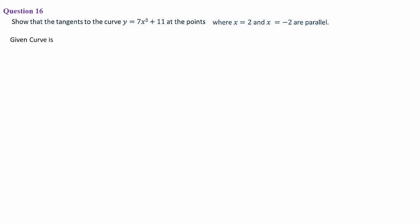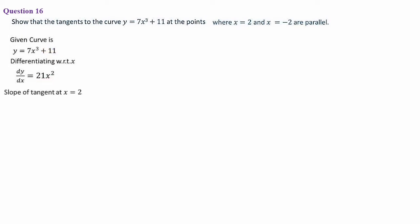The curve is y = 7x³ + 11. Differentiating: dy/dx = 7 × 3x² = 21x². Slope of the tangent at x = 2: dy/dx at x = 2 = 21(2²) = 21 × 4 = 84.